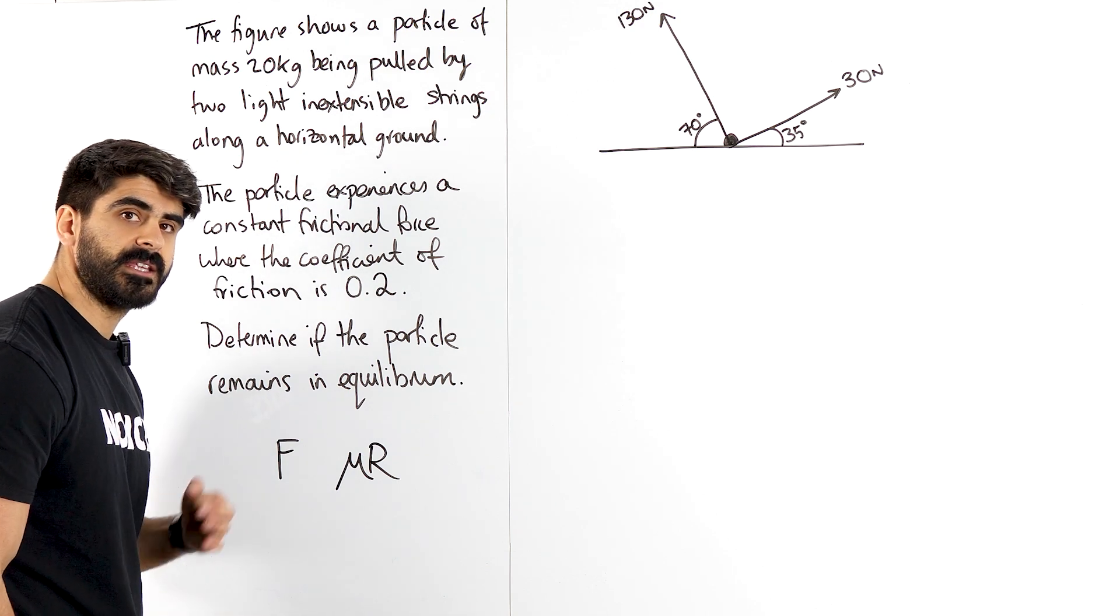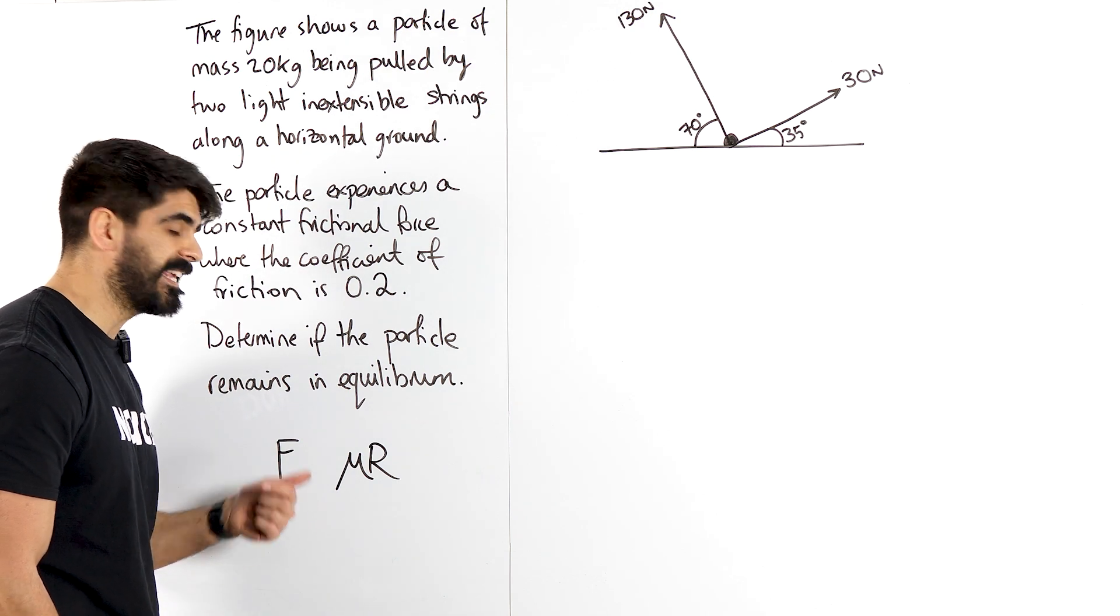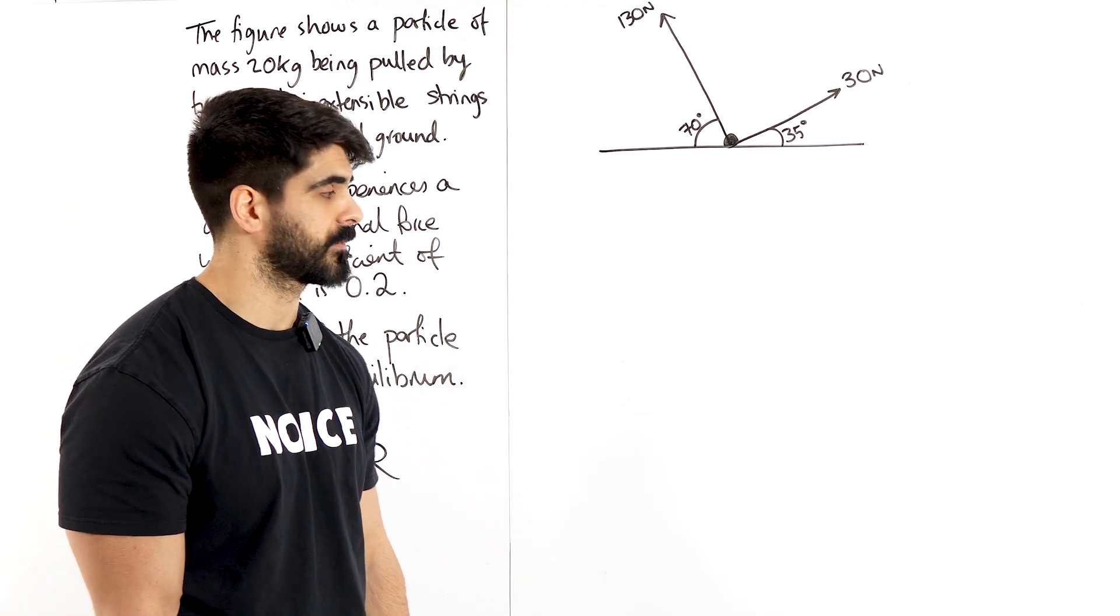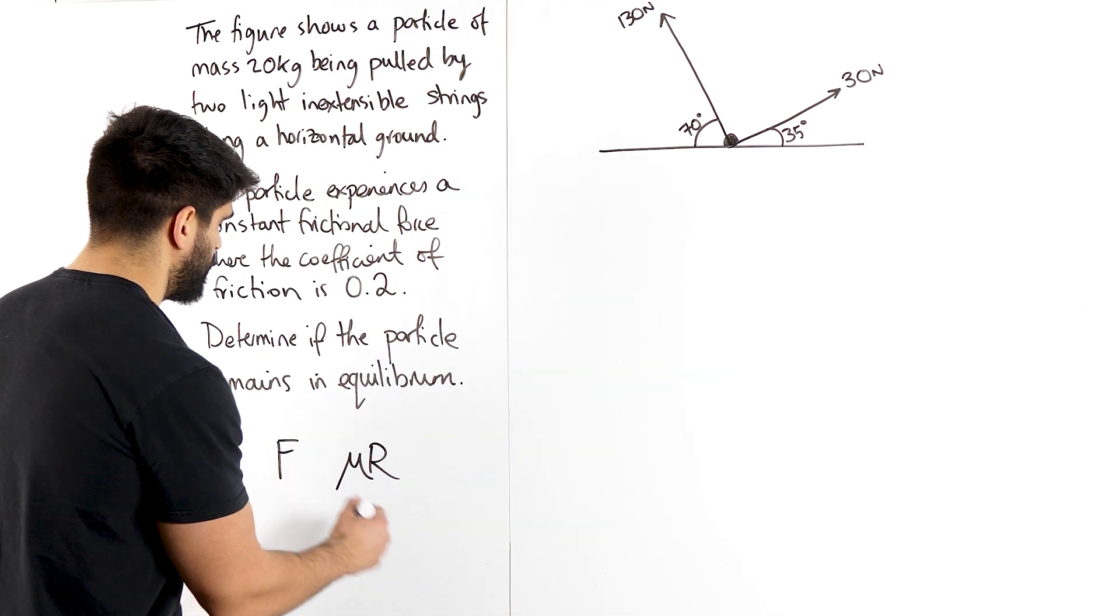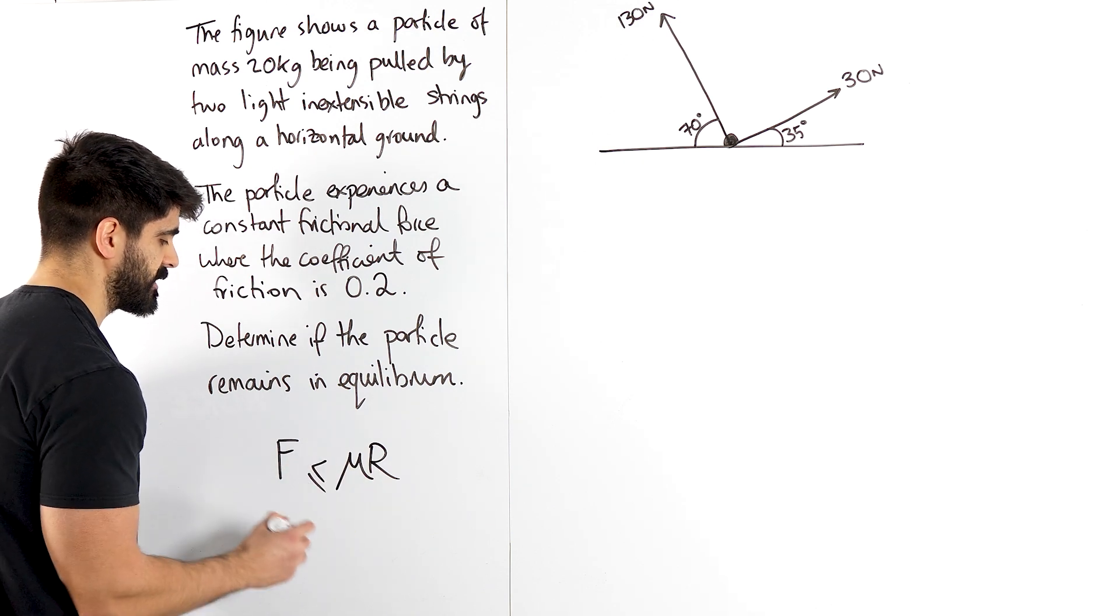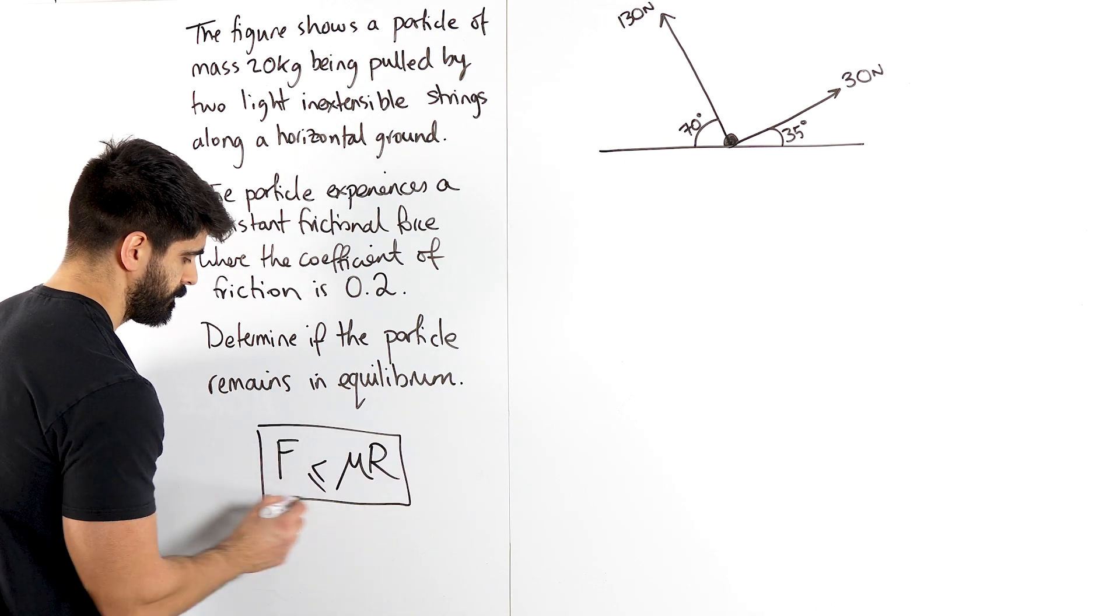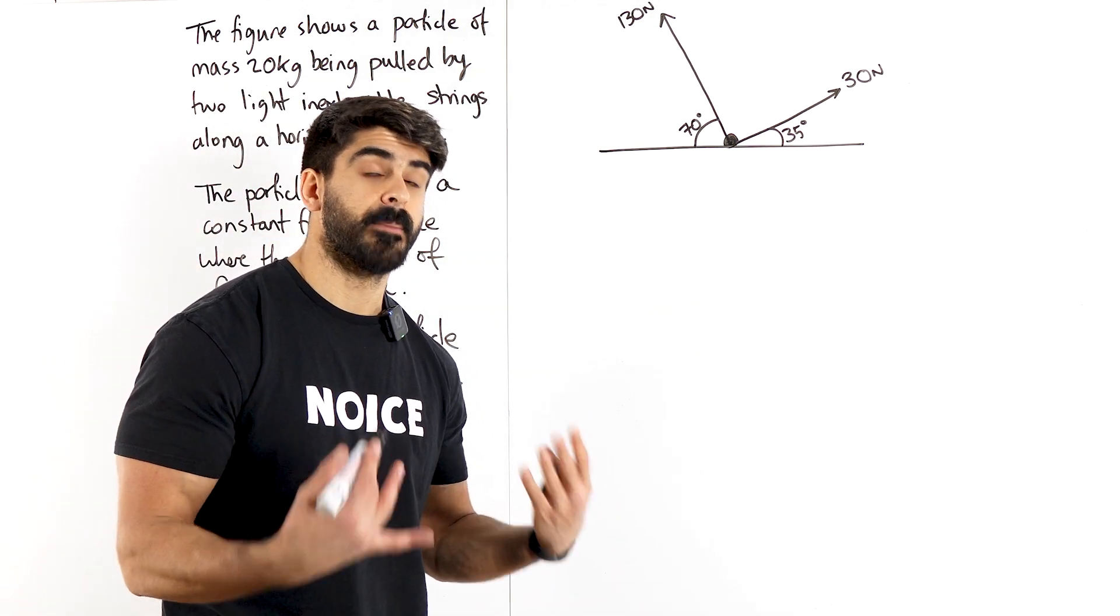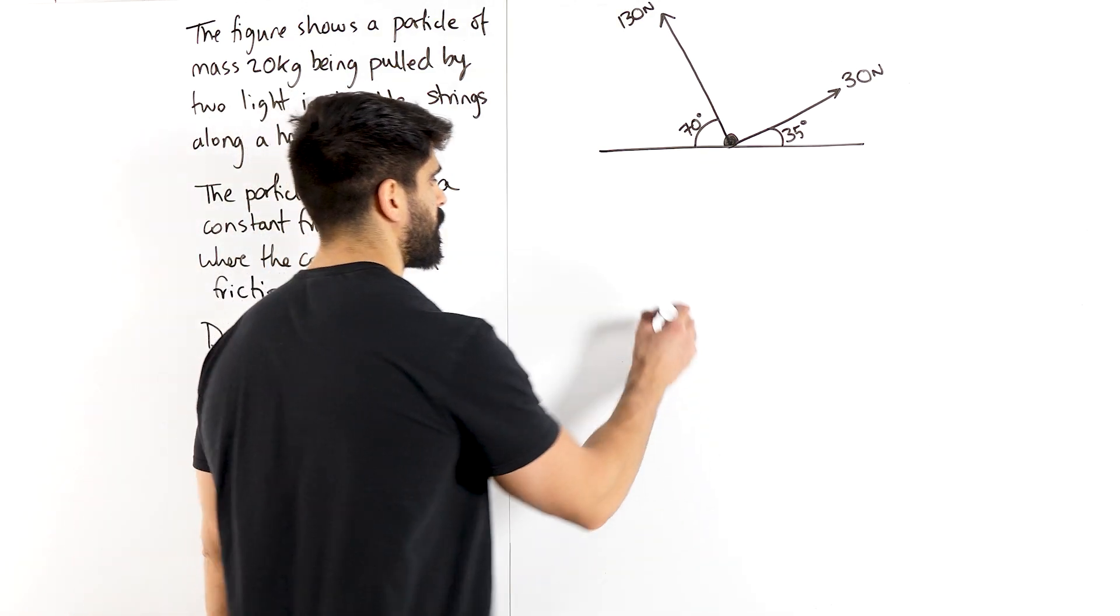But another thing is that friction only gives as good as it gets up until a certain point. So friction can equal mu R. That's its maximum, but it could also be less than that. And it depends on the force that it's opposing. For example,